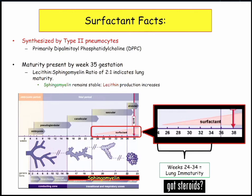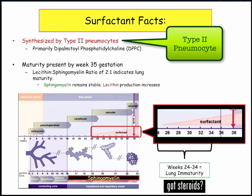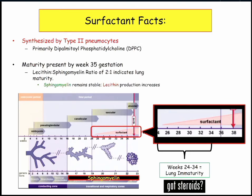Surfactant facts: it is phosphatidylcholine, essentially a phospholipid synthesized by the pneumocytes. Lung maturity is reflected at around week 35 of gestation — by then you have enough surfactant and the lungs will work out okay. Before week 34, the lungs are still a little immature and we're not making enough surfactant. This is where the two-to-one ratio comes in.